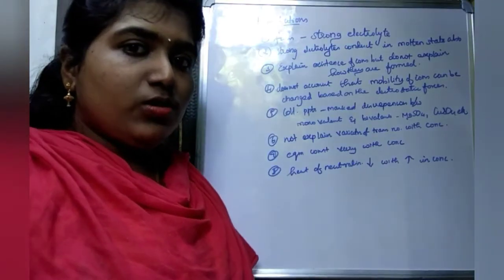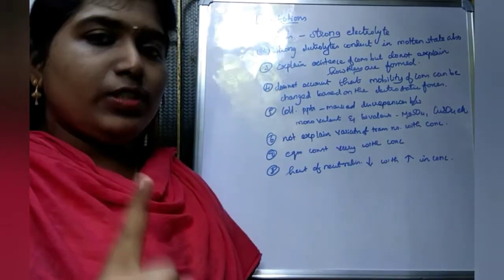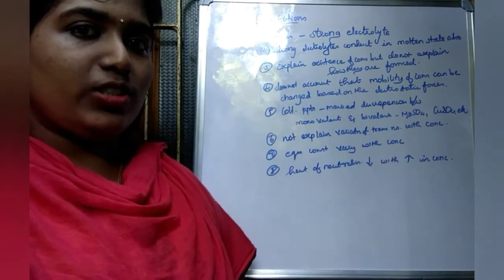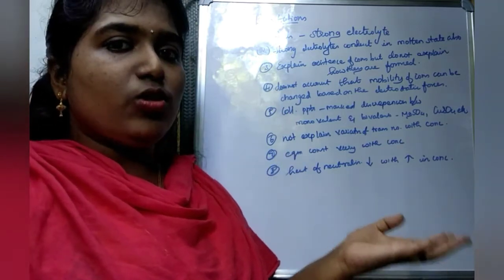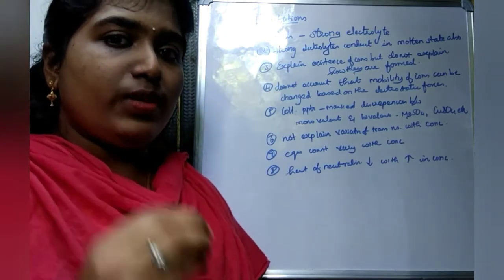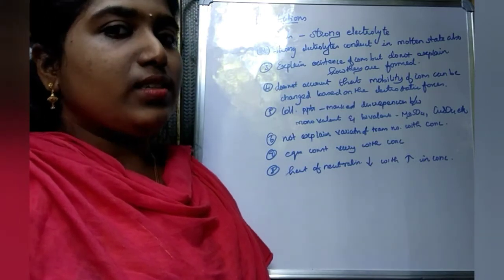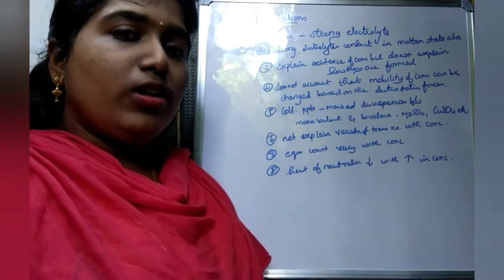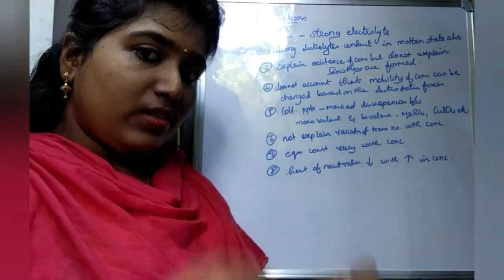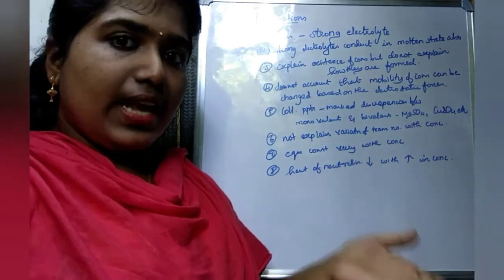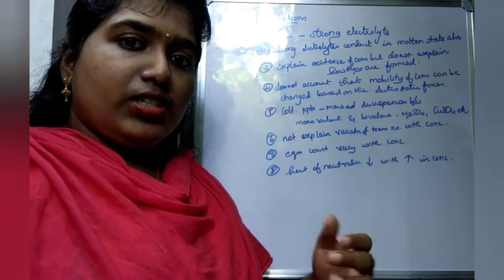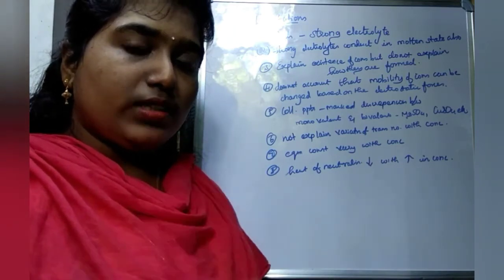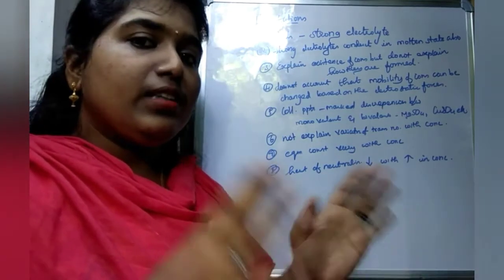Now we learn the limitations of Arrhenius theory. The first limitation is the failure of Ostwald's dilution law when applied to strong electrolytes — this theory is mainly based on weak electrolytes, and Ostwald's dilution law fails for strong electrolytes. The second limitation is that strong electrolytes conduct electricity in the molten state as well. According to Arrhenius theory, ions conduct only when dissolved in a solvent, but NaCl or AgCl in molten state conducts without any solvent, so the theory fails here.